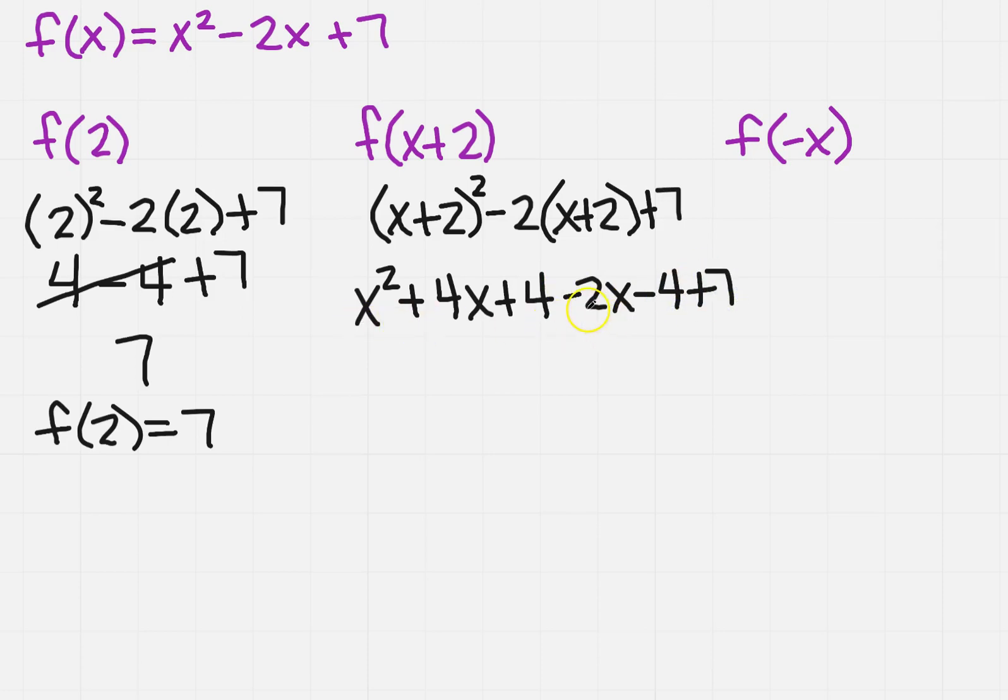And now I have just an x squared. I've got a 4x minus 2x is 2x. A plus 4 and a minus 4 cancel, so this is going to be plus 7.